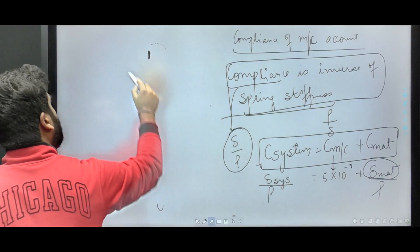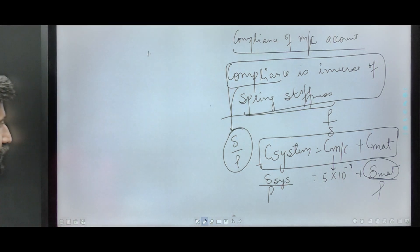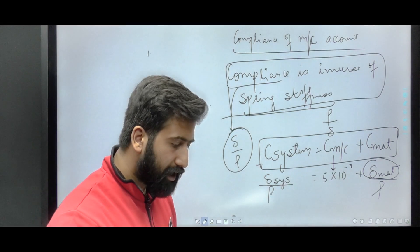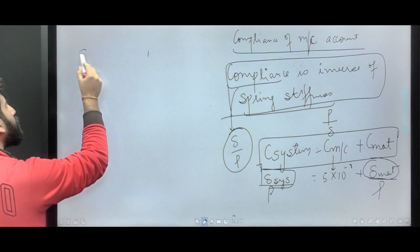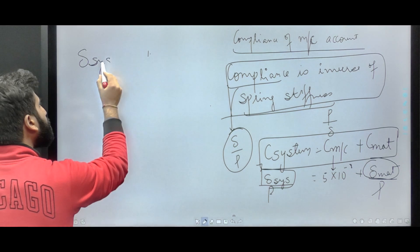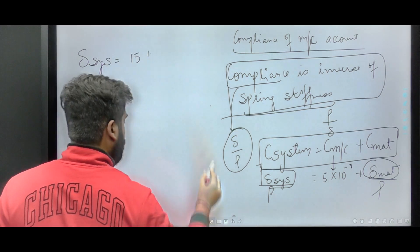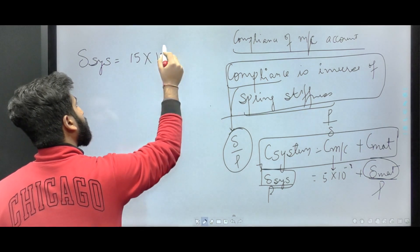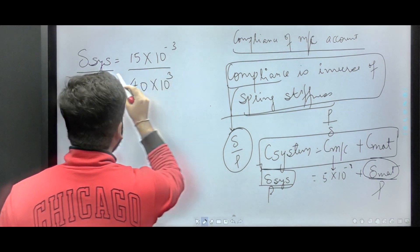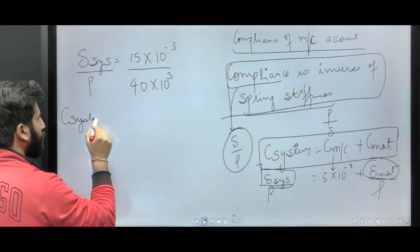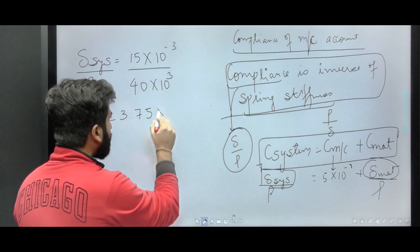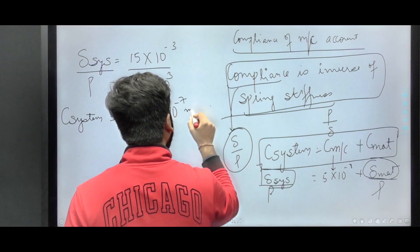From the question, the displacement measured using the cross head motion at failure was 15 mm, so delta_system equals 15 mm, because the cross head measures the deformation of machine as well as the material. So delta_system is 15×10⁻³ meters. Dividing by P which is 40×10³ Newtons, the compliance of the system comes out to be 3.75×10⁻⁷ meter per Newton.